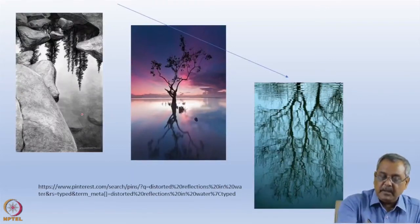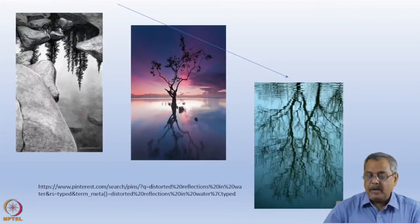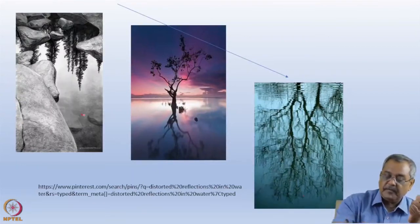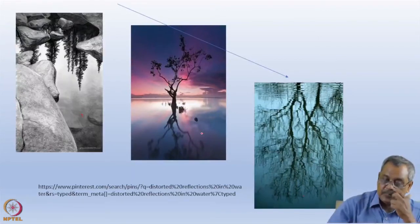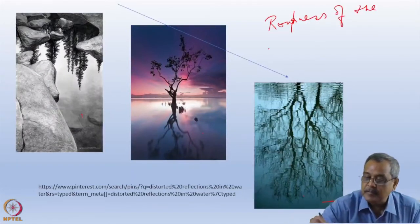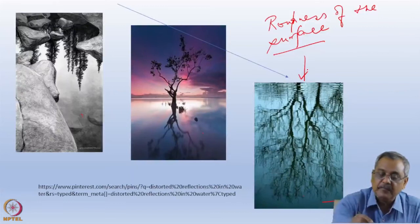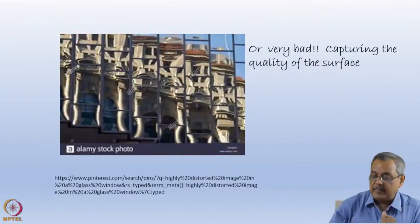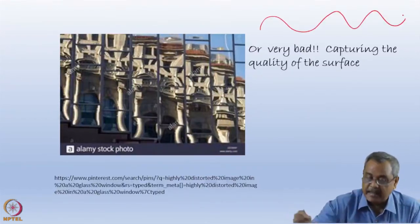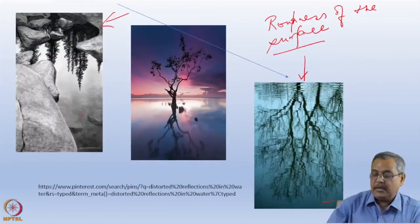From this image, as I travel across, one qualitative comment I can make is that the water surface is smooth here, slightly less smooth here, and rough here. So I can talk about roughness in a qualitative term — roughness of the surface. From the reflection, I can make a qualitative comment about the surface being more rough or less rough, or perhaps wavy at a macroscopic length scale.